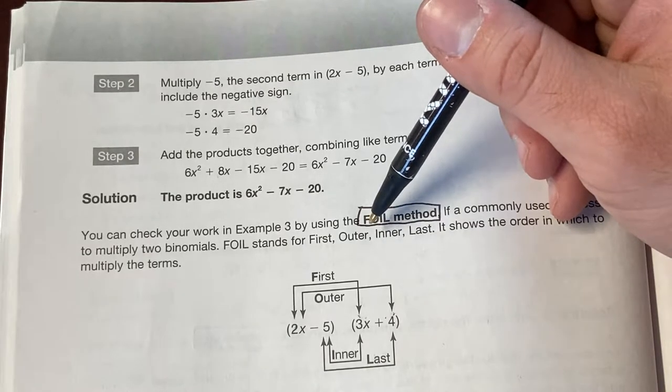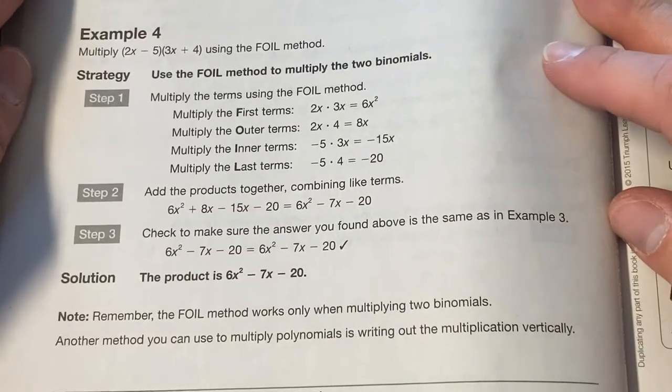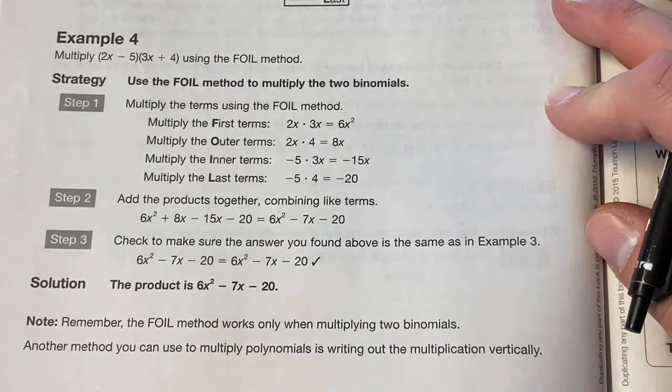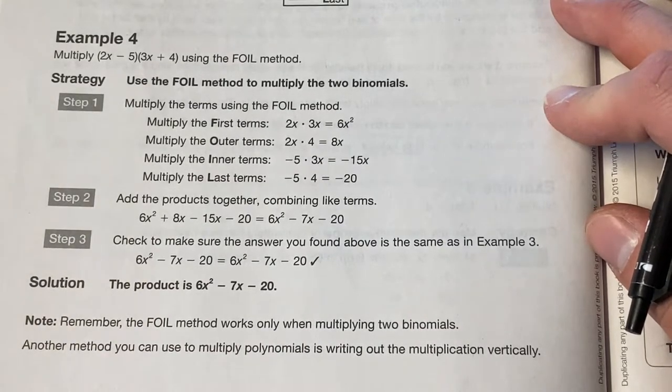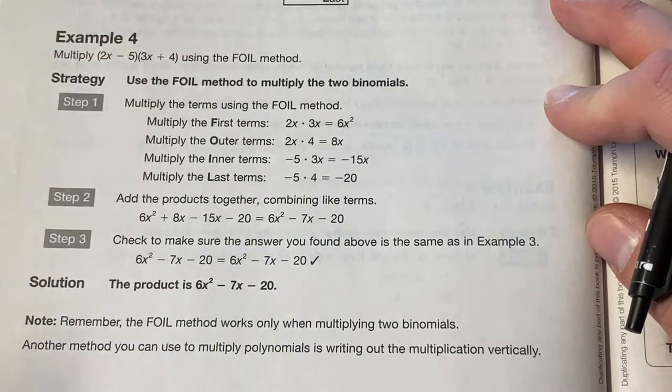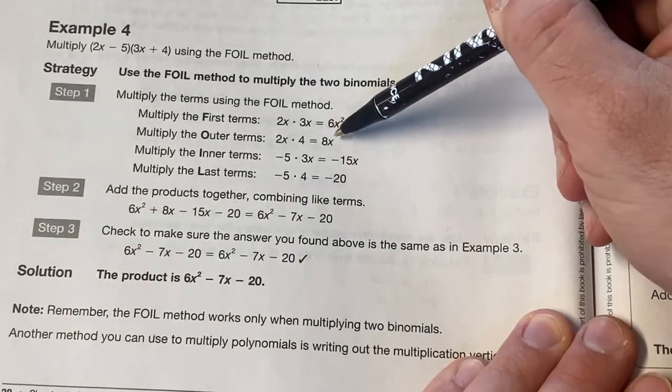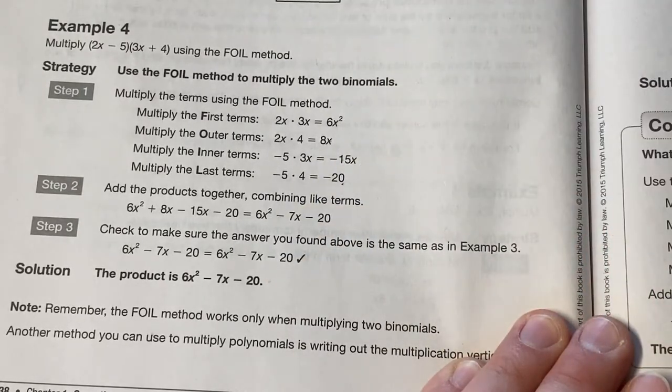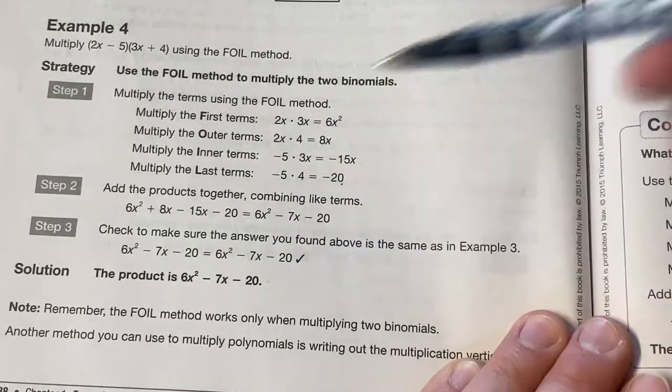When you multiply two binomials, you FOIL. First, outer, inner, last. You can take a look at this problem right here. Maybe pause it and read through if you'd like where they quote-unquote use the FOIL method. We used the FOIL method in the previous problem. We just didn't call it FOIL. What we called it was the distributive property because that's what it is. FOIL is just an acronym for reminding you what exactly it is you're doing. So if you wanted to pause this and see their first outer, inner, last, that's fine. But basically, they would do the same thing we just did to get the 6x squared minus 7x minus 20, which is the same thing we got.